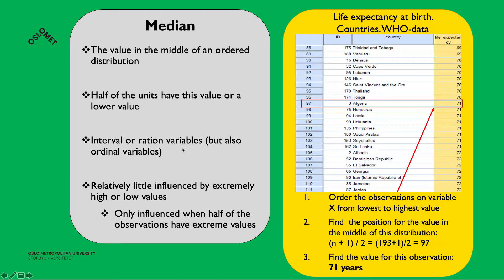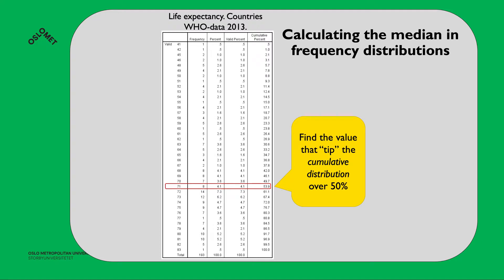The variable for the median has to be at the interval or ratio level, but it can also be an ordinal variable if it has enough values. The median is relatively little influenced by extremely high or low values, because it's only affected when half the observations have extreme values. You can also find the median using the cumulative frequency distribution by finding the position where the cumulative percentage tips over 50%, which in our example also gives 71 years.